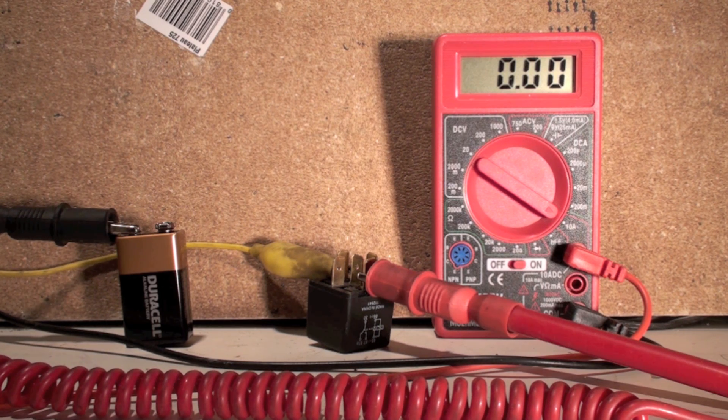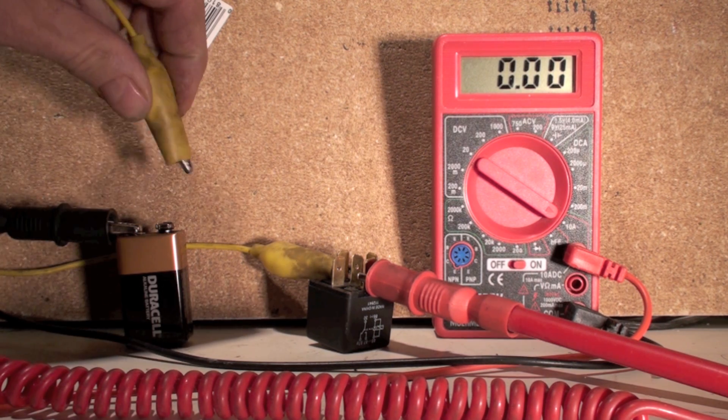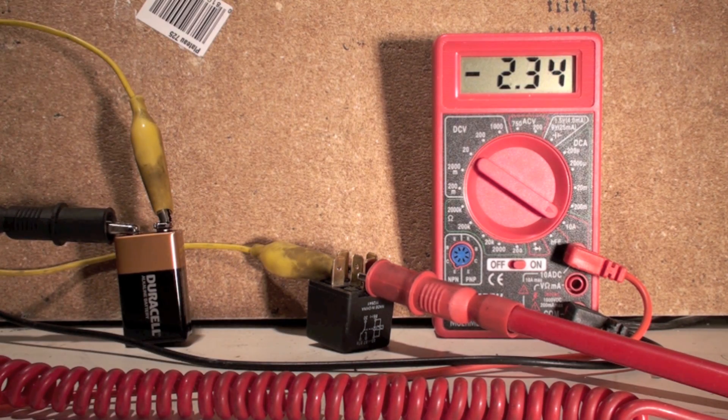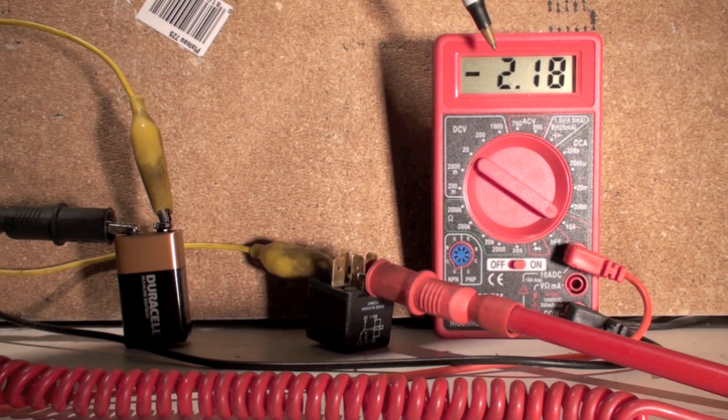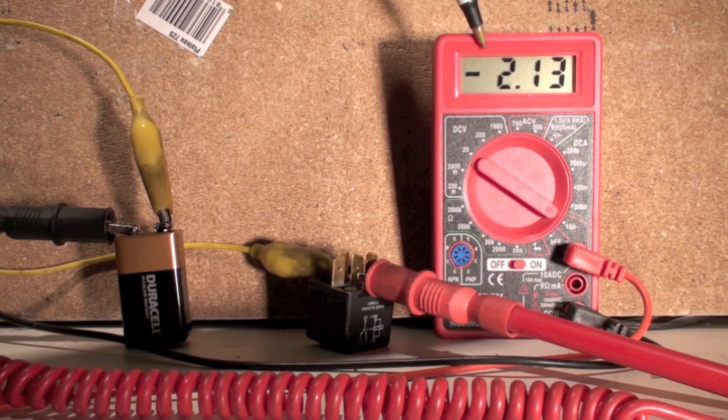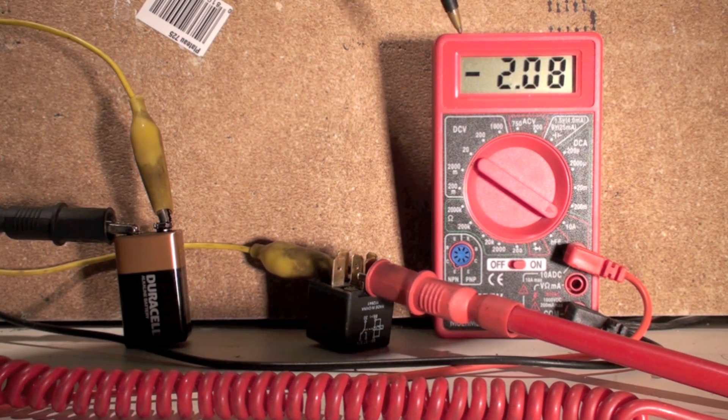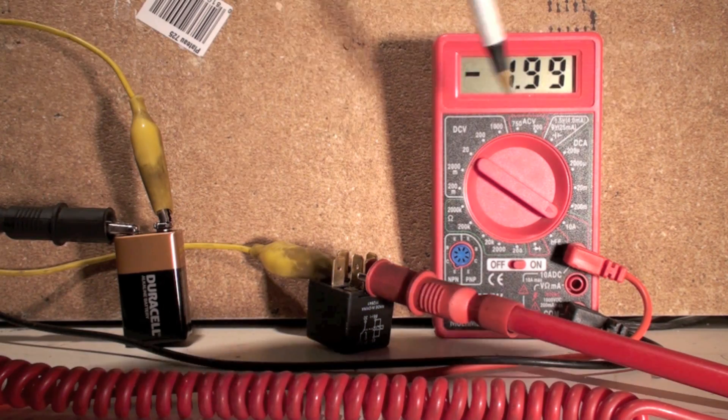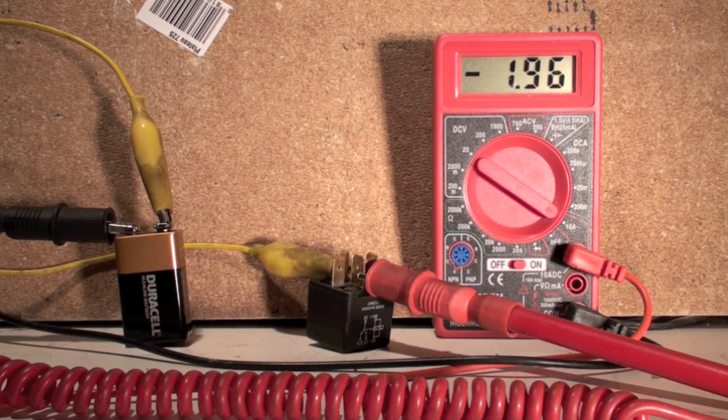I'm putting this in line, so when I put this jumper on here, you can see I'm reading an amp draw. Now it's minus because I got it hooked up backwards, but it will read the amp draw. It has to go through the meter.